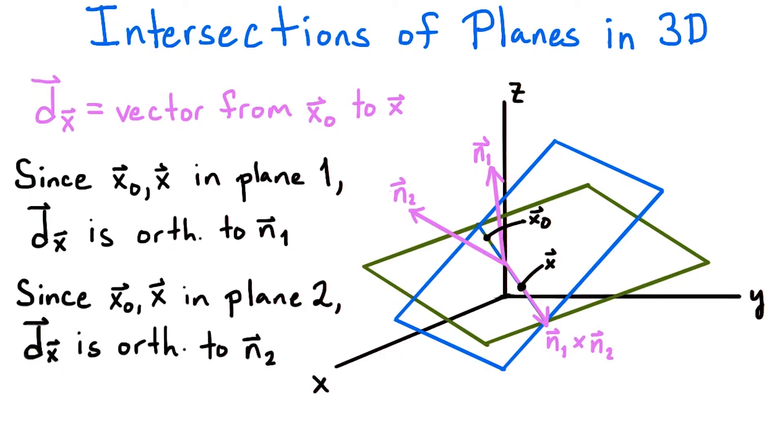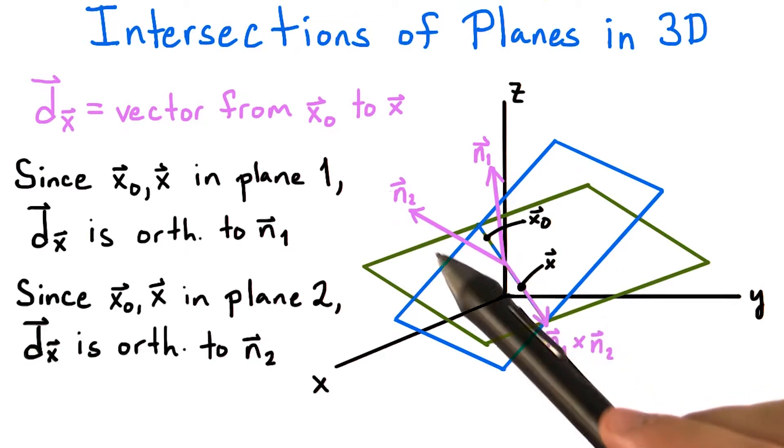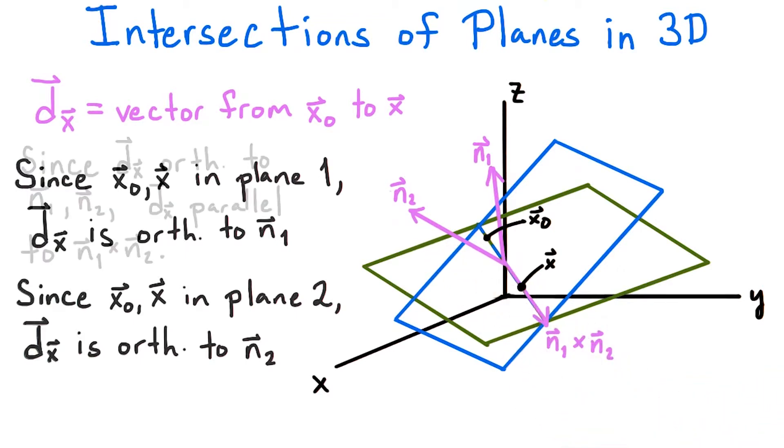By similar reasoning, since x0 and x are both in plane 2, the vector connecting them, dx, will be orthogonal to n2. Since dx is orthogonal to both n1 and n2, and since we're in 3 dimensions, dx must be parallel to the cross product of n1 and n2.